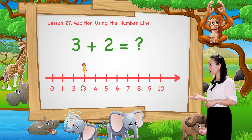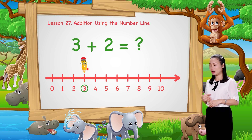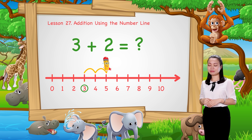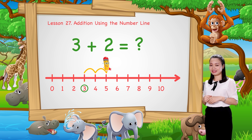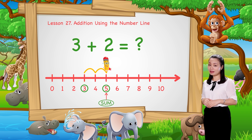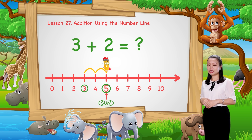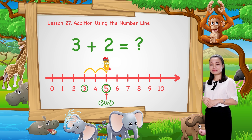We start from number 3. Then jump 2 numbers to the right. Then see the number where we stop to find the sum. Here, we stop at number 5. Therefore, 3 plus 2 equals 5.